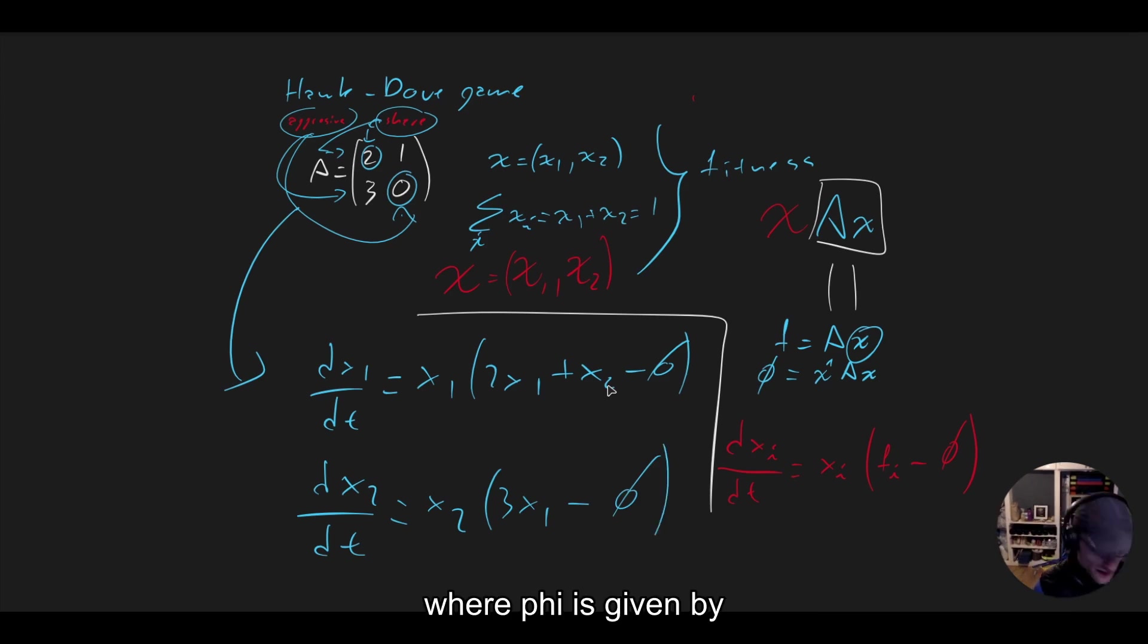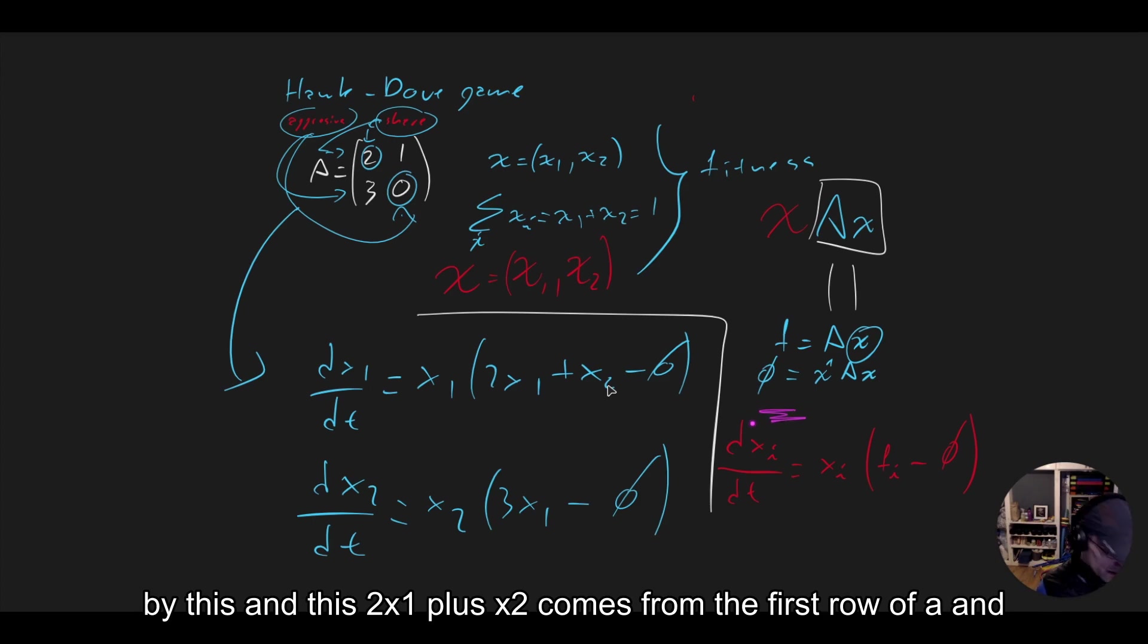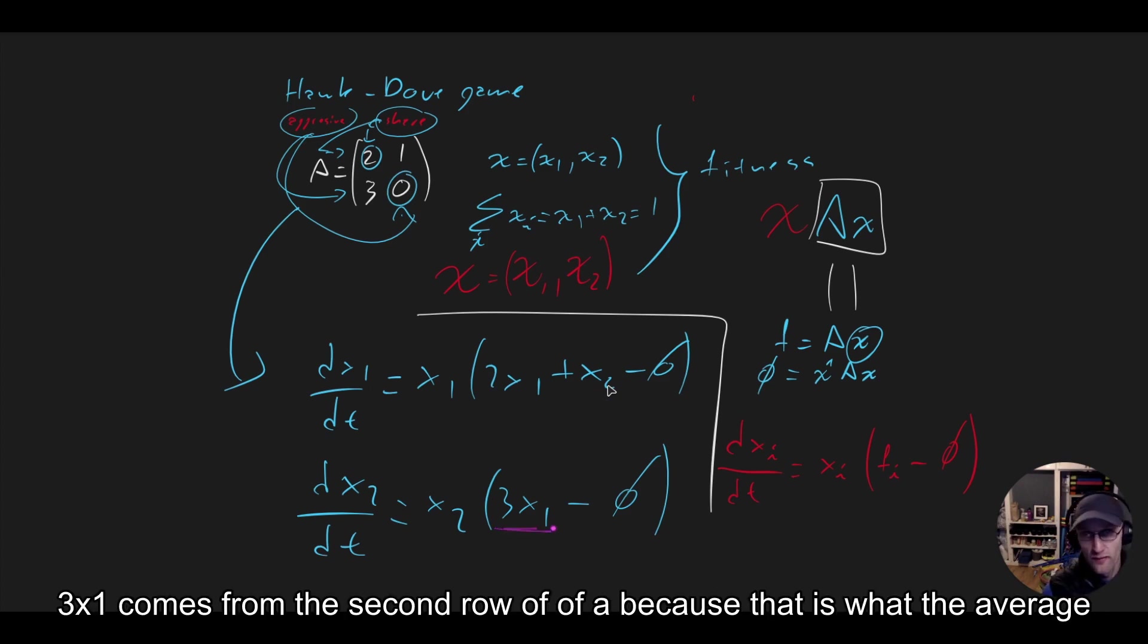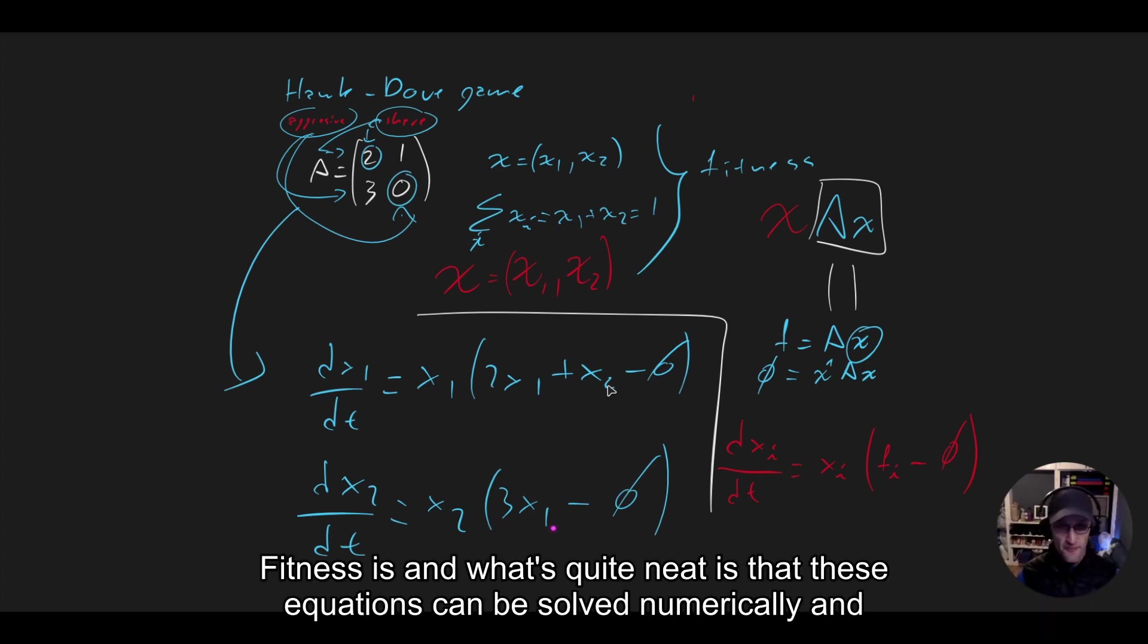Where phi is given by this. And this 2x1 plus x2 comes from the first row of A, and 3x1 comes from the second row of A, because that is what the average fitness is.